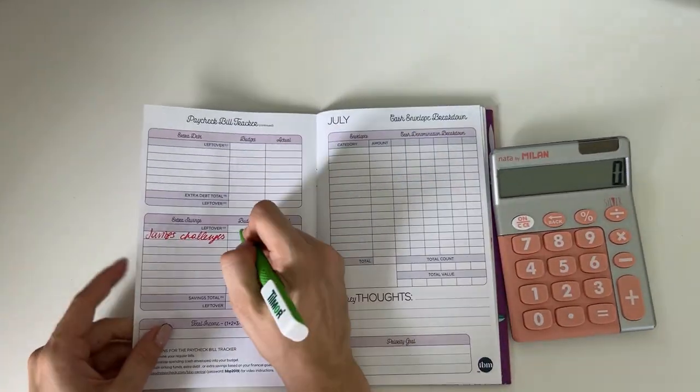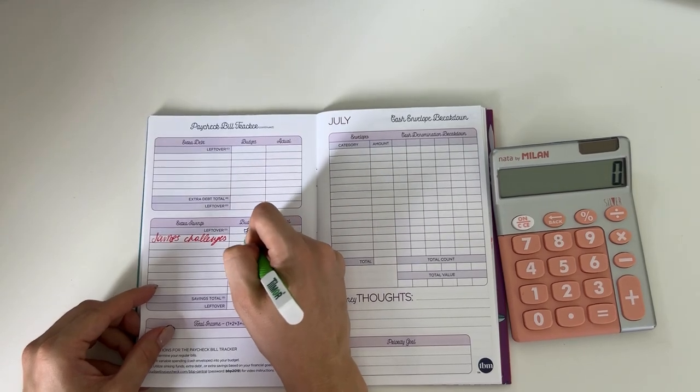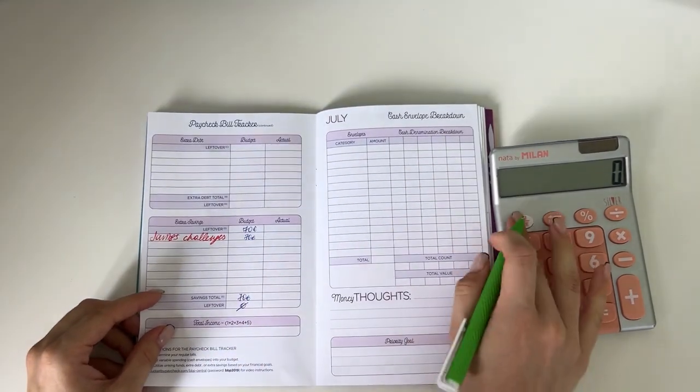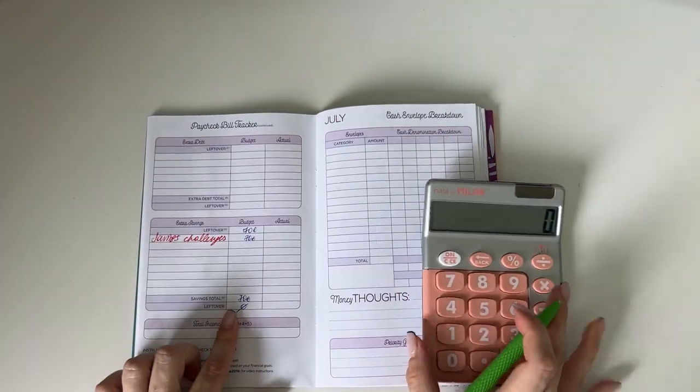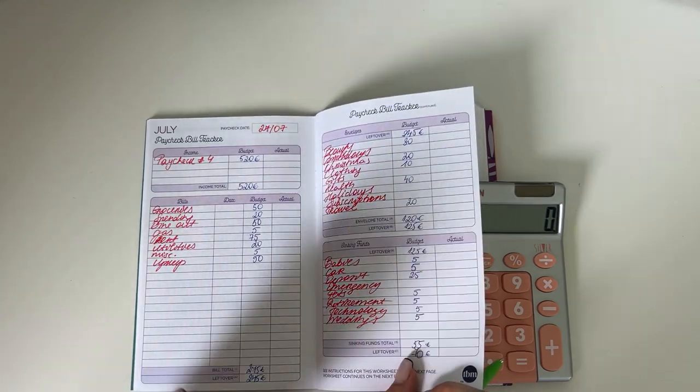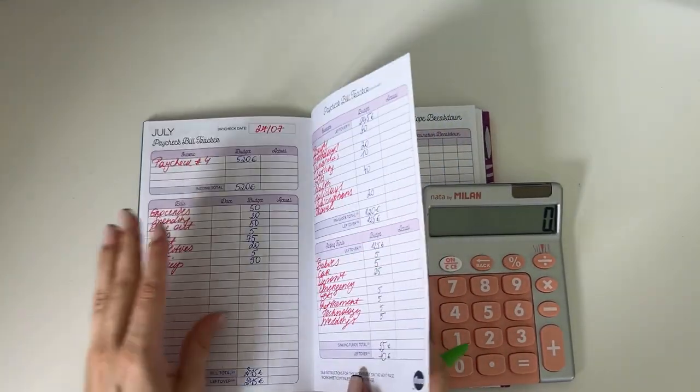That's 55 going into long-term sinking funds, so 125 minus 55 is 70 euros. Those 70 euros are all going into the savings challenges. Perfect, so that's zero euros left to budget, which means that every euro of our income has a place to go into our budget.